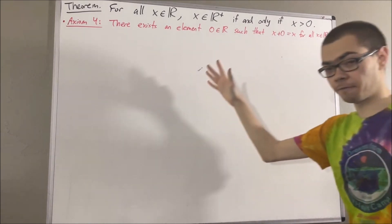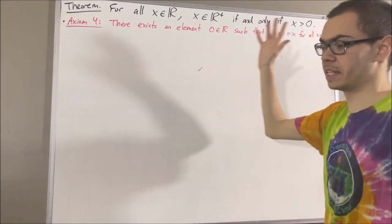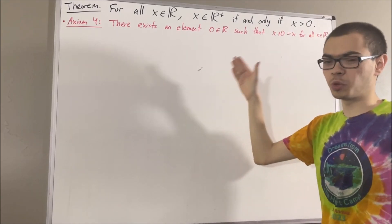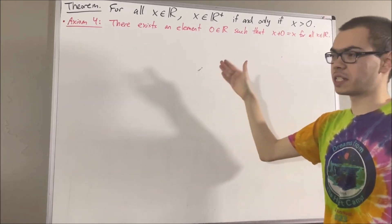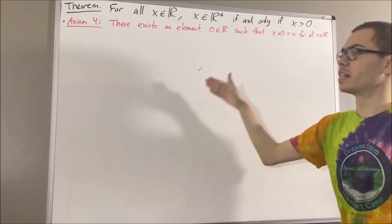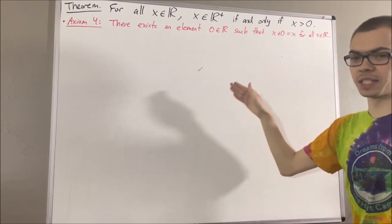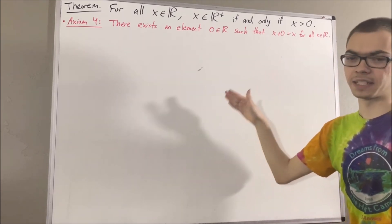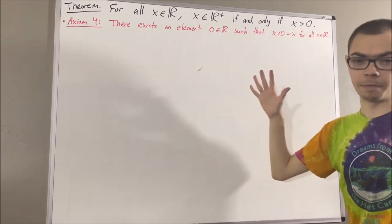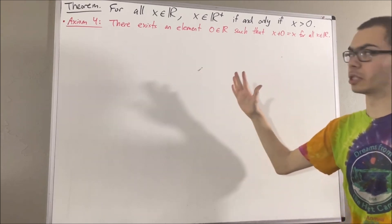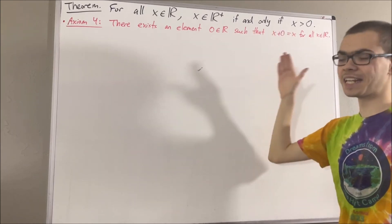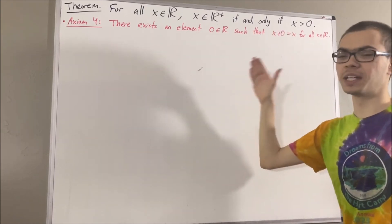Axiom 5 introduces the concept of the negative of a real number, and it says for every real number x, there exists a real number, which we call the negative of x, that satisfies the property that x plus the negative of x is equal to 0. So every real number has a negative. In particular, 0 has a negative, and previously we have proven that the negative of 0 is equal to 0.